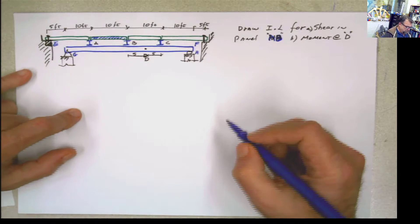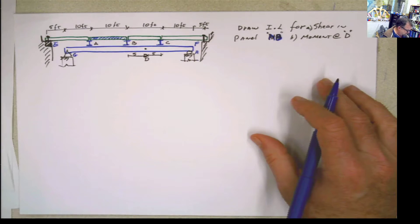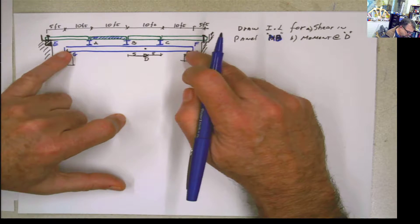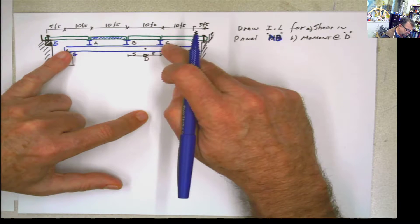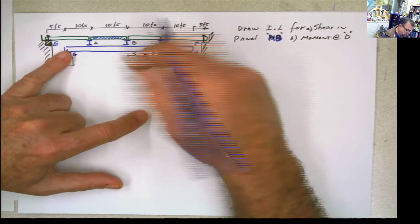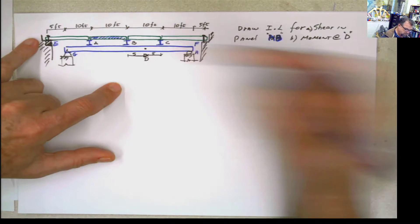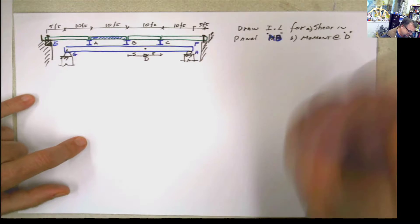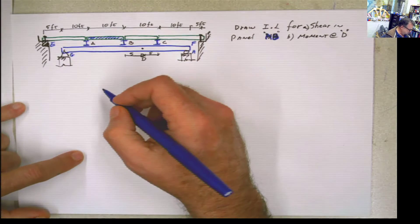This is a typical example where students go 'oh my god, that's so crazy.' No, there's nothing crazy here. You just have this girder, these are the floor beams. But one of the floor panels is on top of the girder, and one is not. We treat it exactly the same way as regular influence lines.